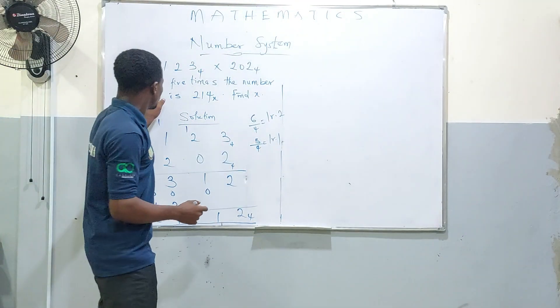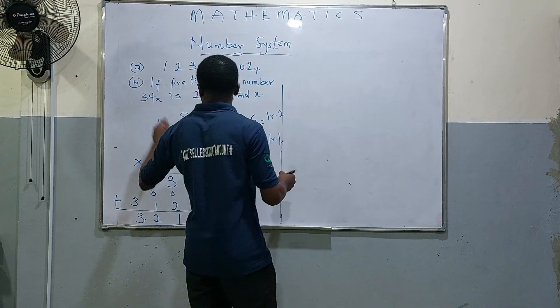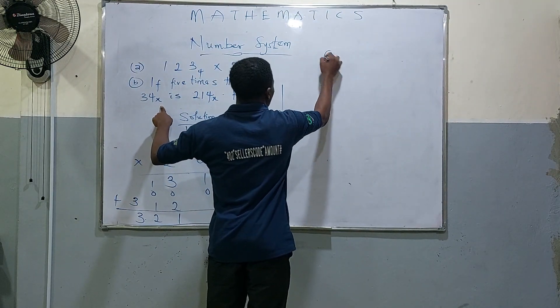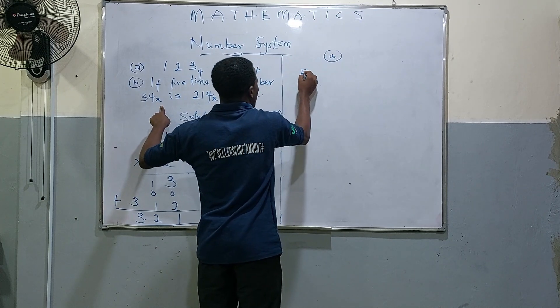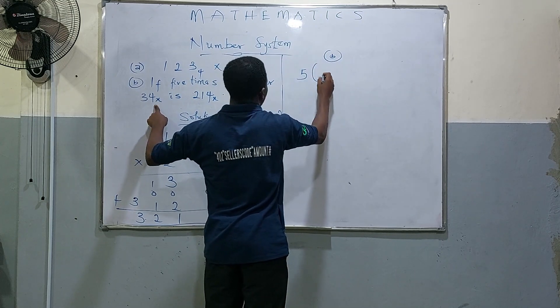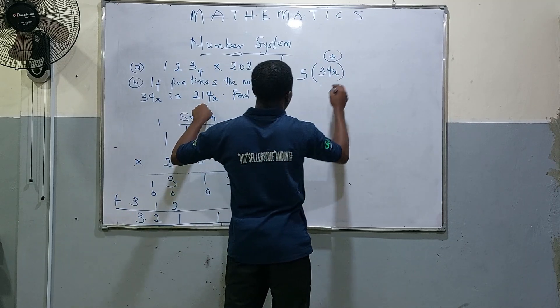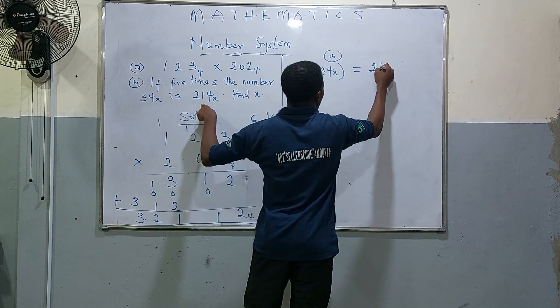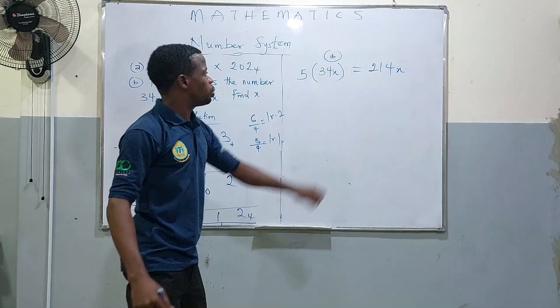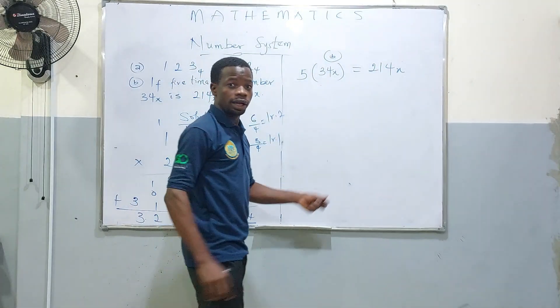Let's go to the next question. If I turn the number 34 in base x, let's solve the big part. We have 5 times 34 in base x gives you 2, 1, 4 in base x. How do we get x?